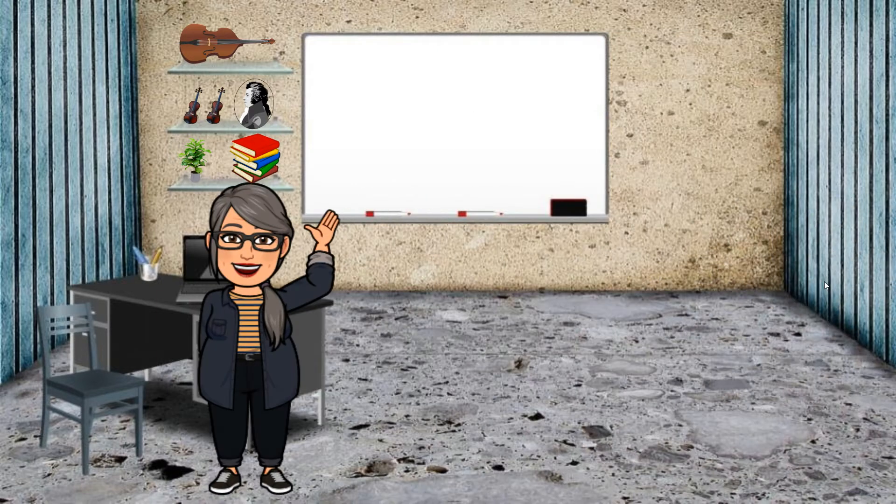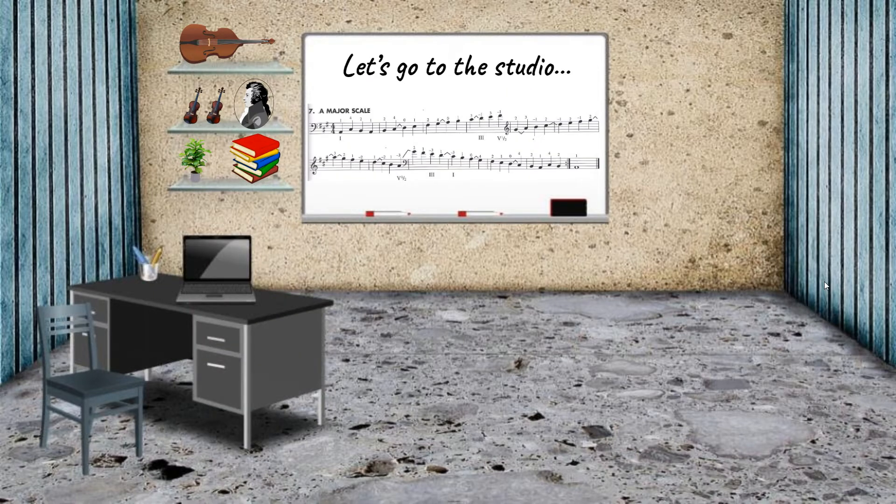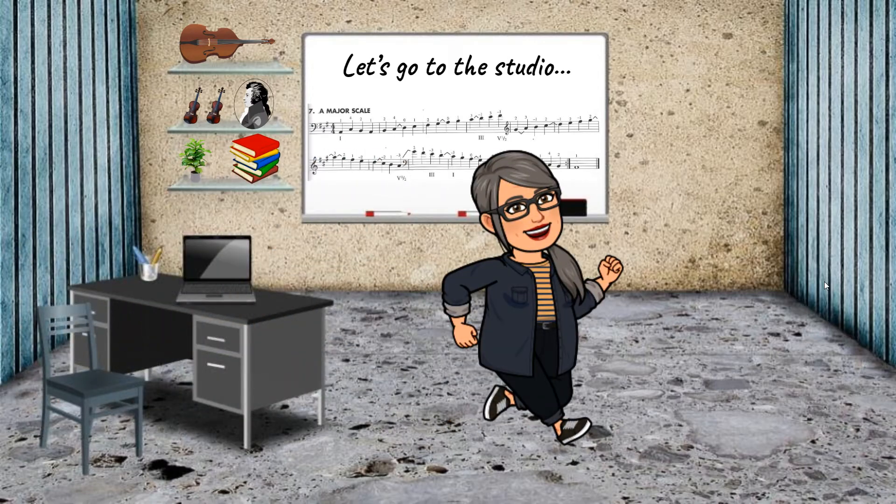Let's go ahead and take a look real quick. A major. In this key we have three sharps: F sharp, C sharp, and G sharp. This is what the key signature would look like in our music if we played something in A major.